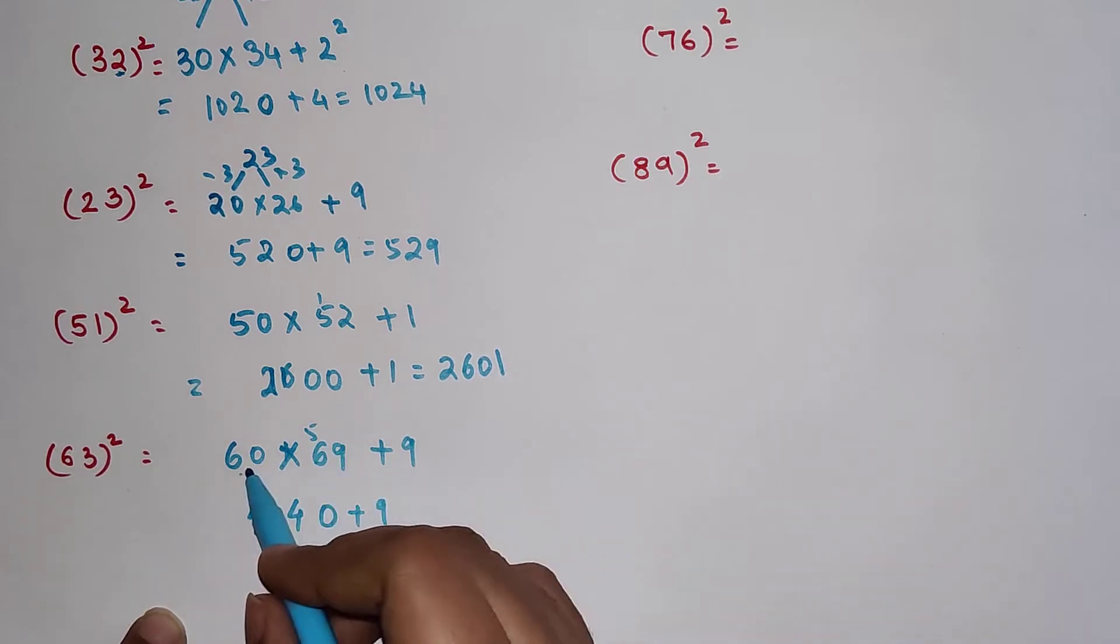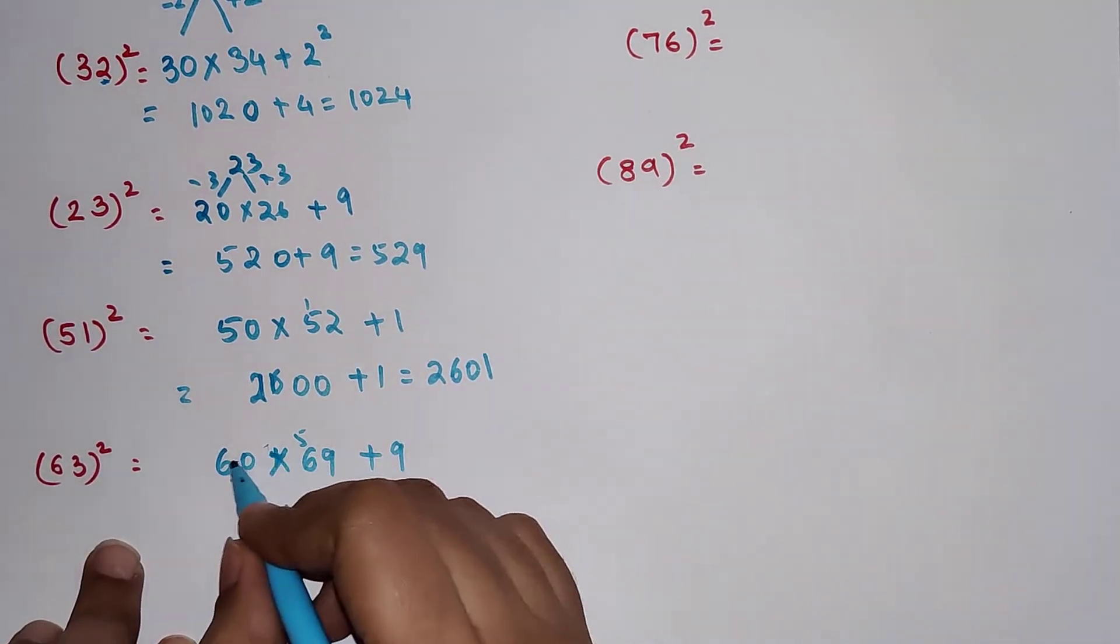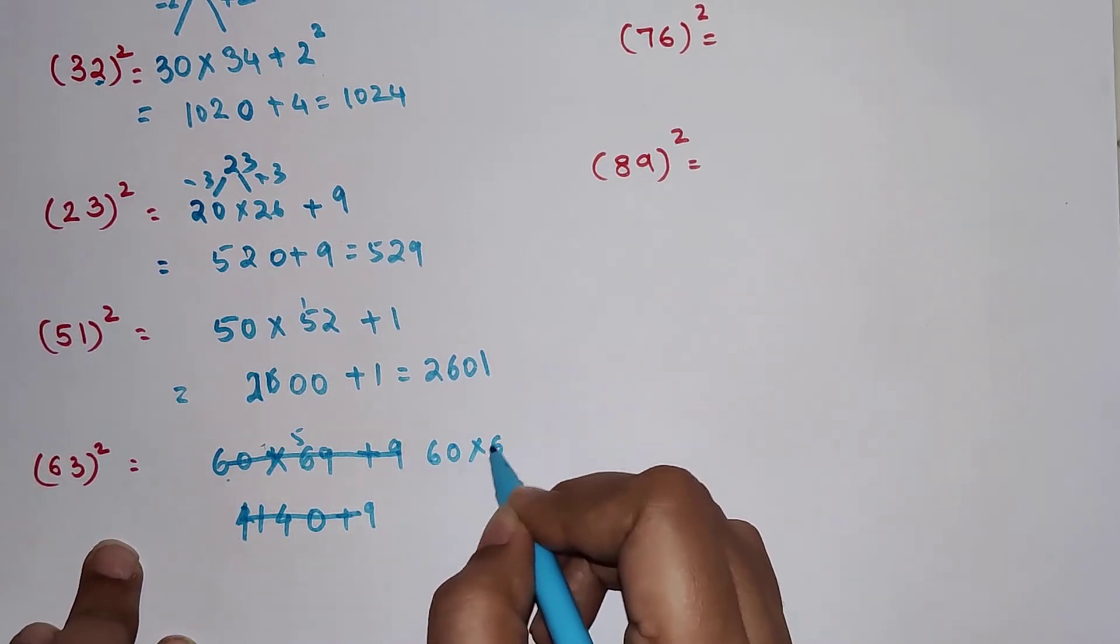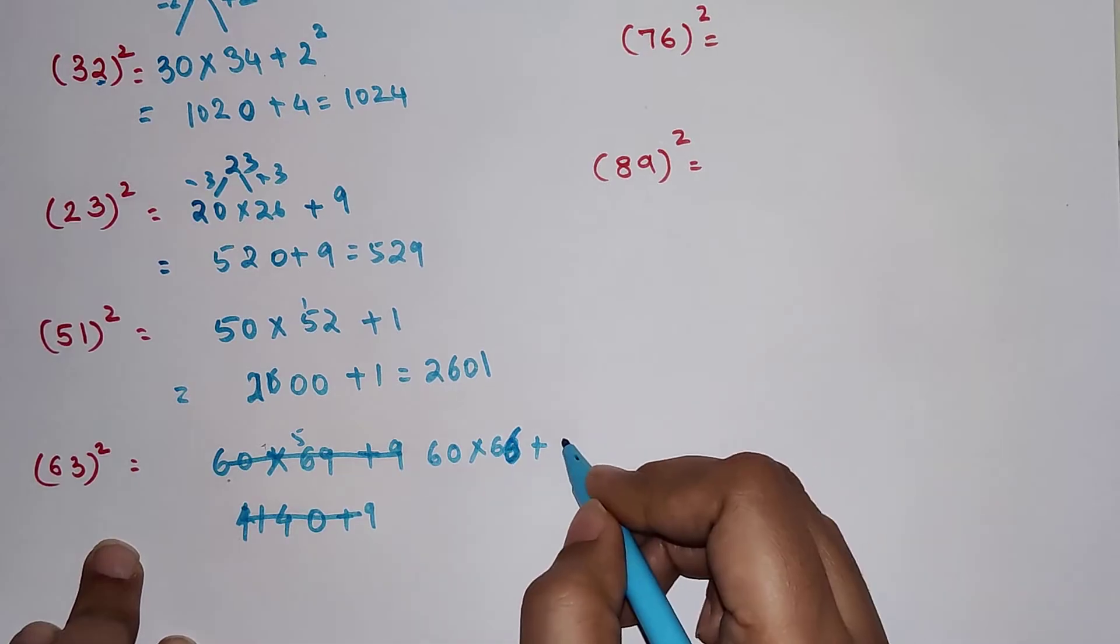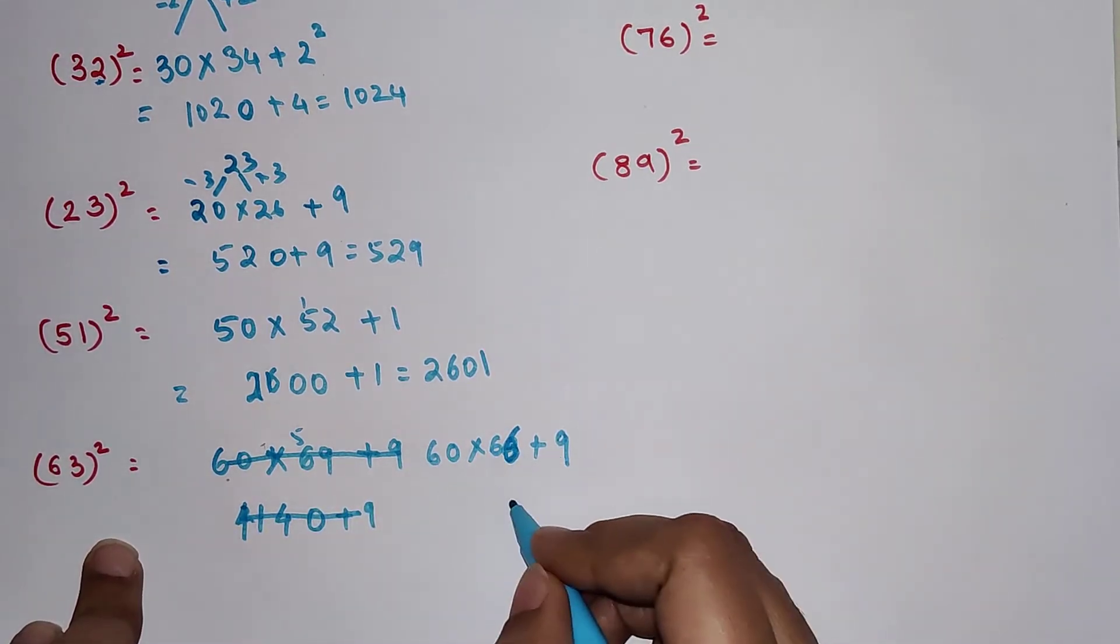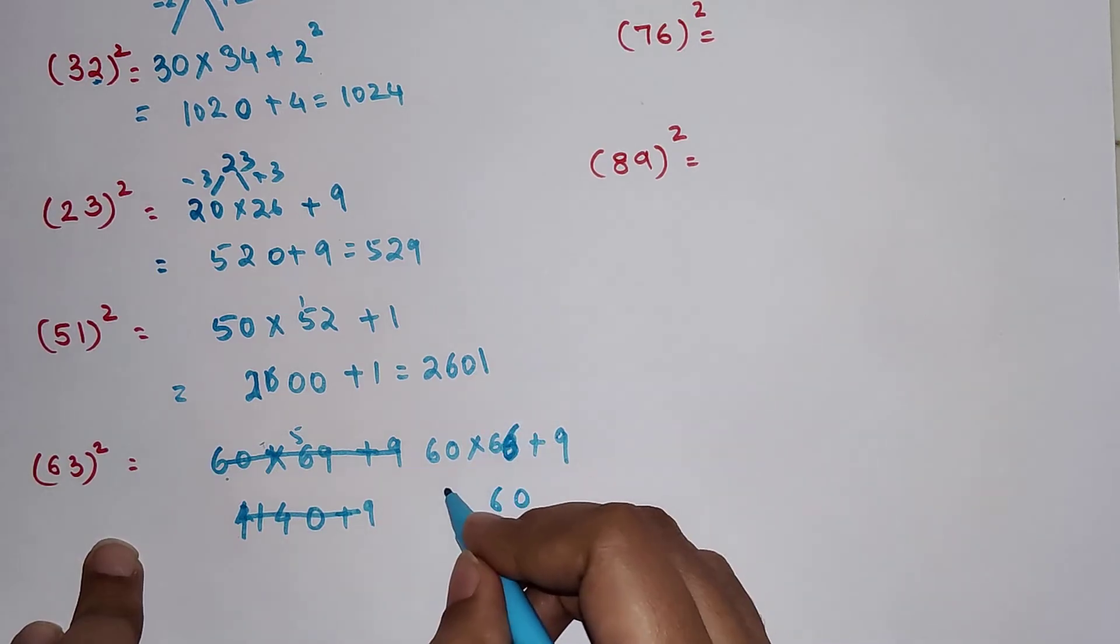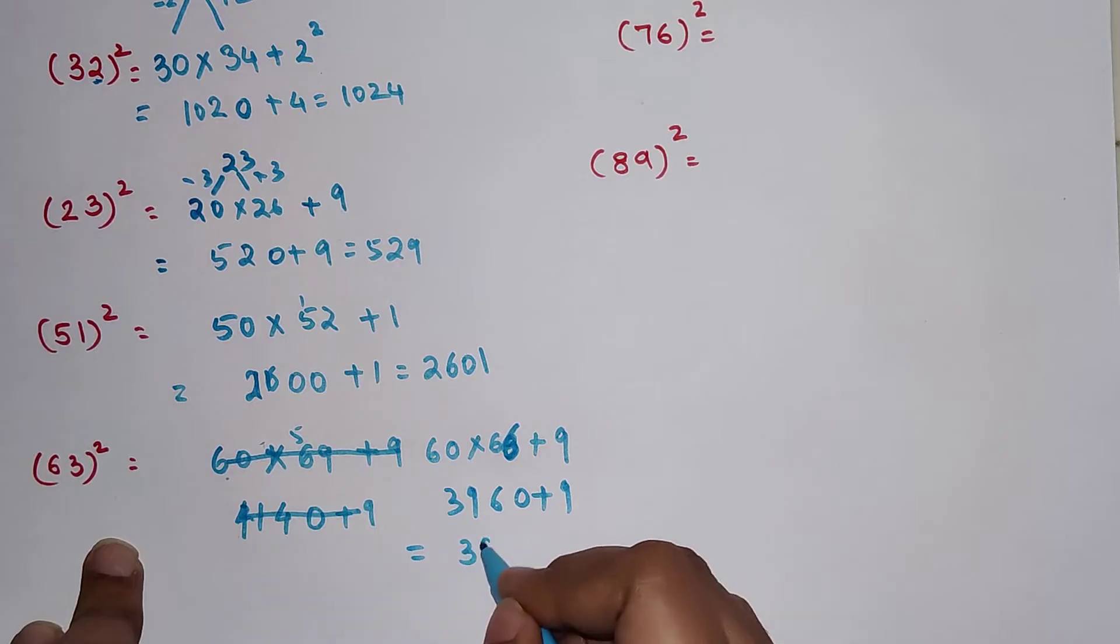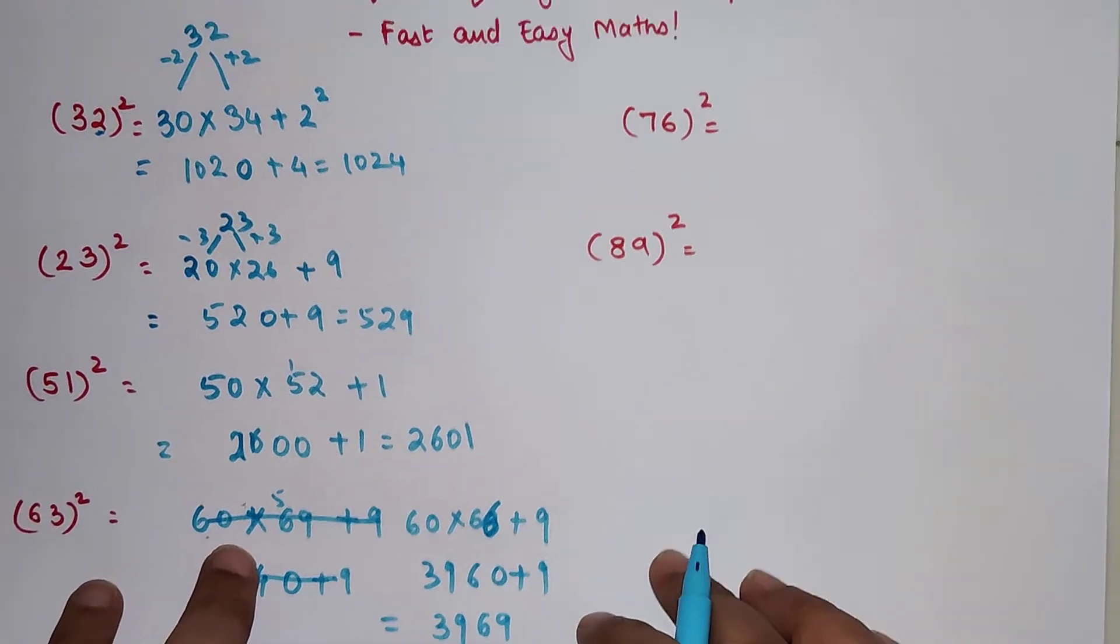Sorry, my bad. Here we should have done 60 into 63 plus 3, so 66 plus 9. 3 square is 9. So we have 0, then 6, then 3 carry, so 39 plus 9, so the final answer is 3969.